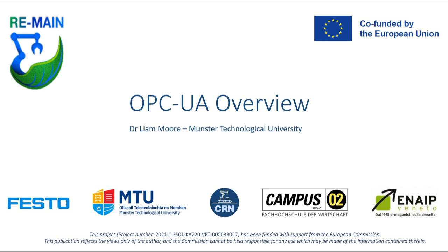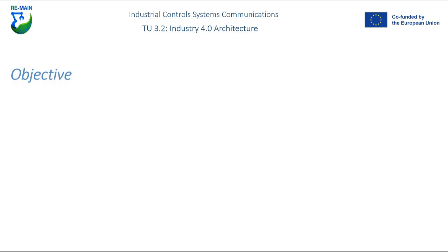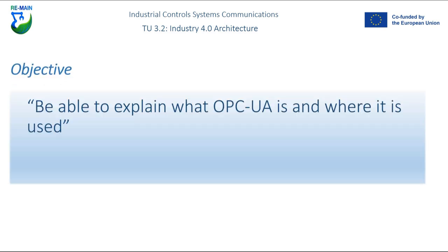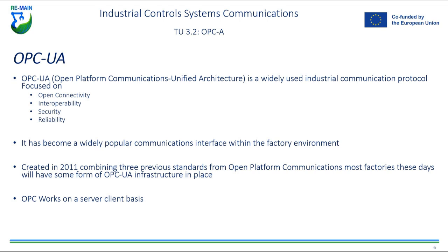We'll start with an overview of OPC UA. Our objective is to be able to explain what OPC UA is and where it is used. OPC UA, otherwise known as Open Platform Communications Unified Architecture, is a widely used industrial communication protocol that enables interoperability between different devices and systems in industry and Industry 4.0 applications. It is a platform-independent, service-oriented architecture that allows communication between different types of devices including sensors, controllers, and other industrial automation equipment.